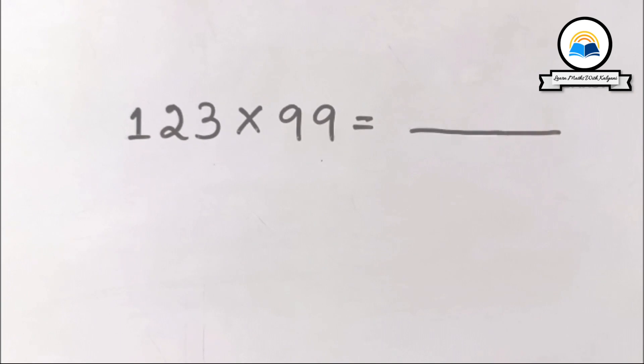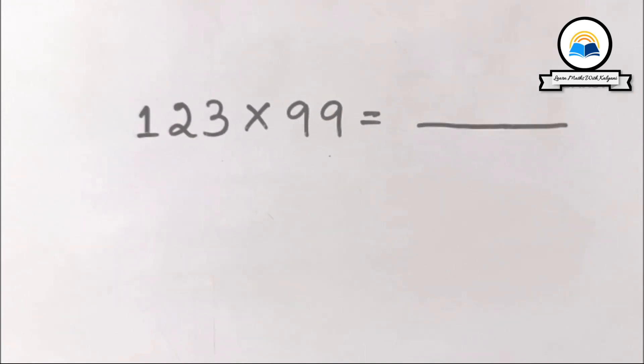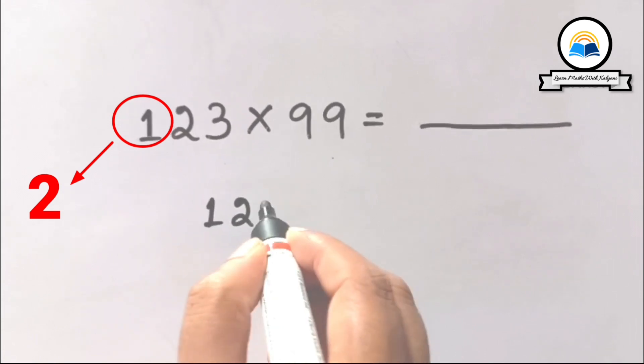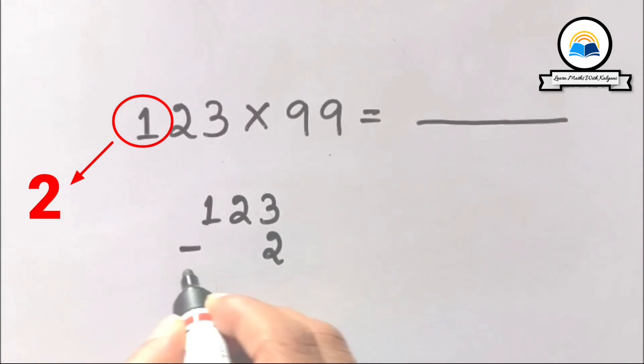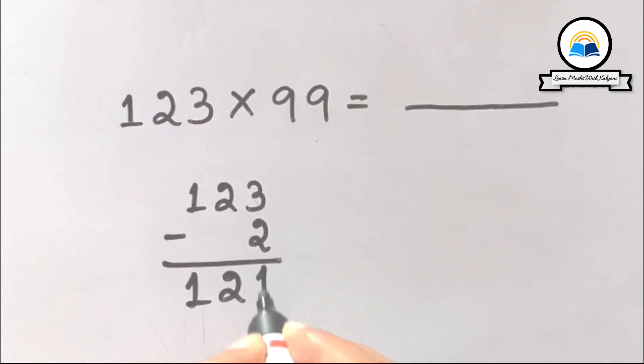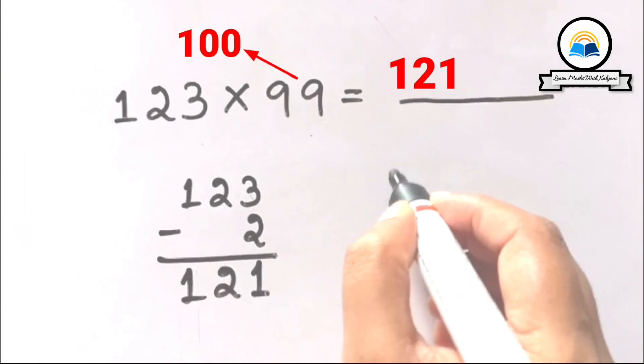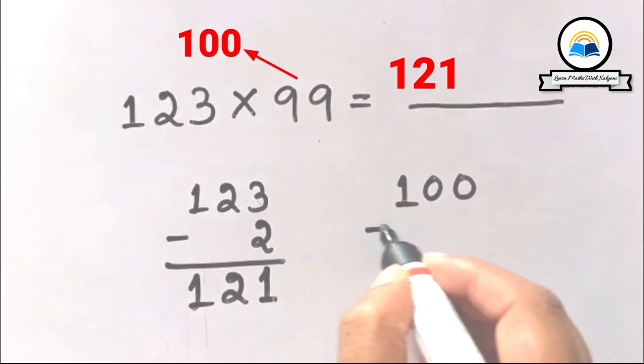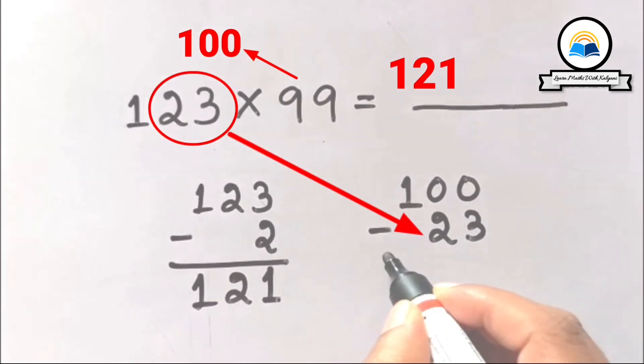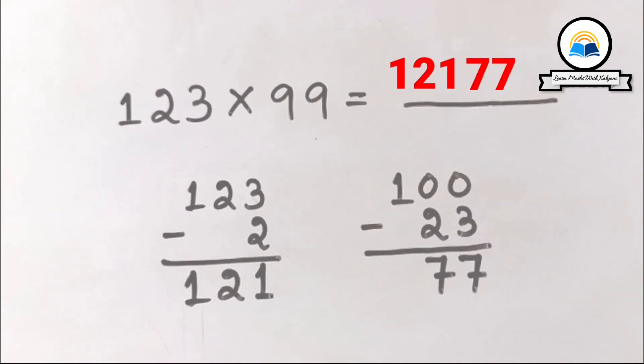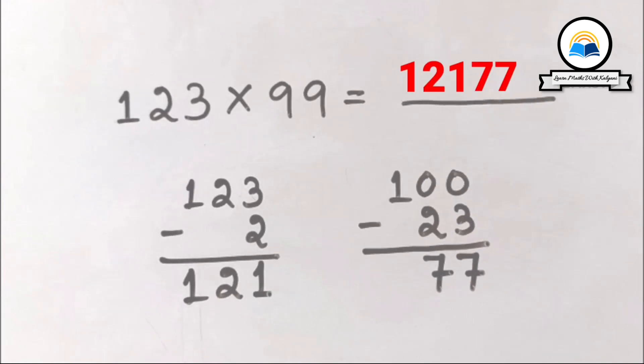Let's do another one: 123 times 99. Successor of 1 is 2, so 123 minus 2 equals 121. Successor of 99 is 100. Since 99 is a two-digit number, we subtract the number formed by the last two digits, that is 23, from 100. 100 minus 23 equals 77. So the answer is 12,177.